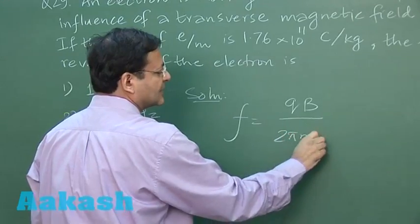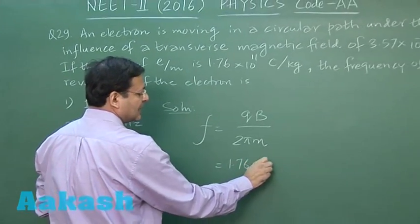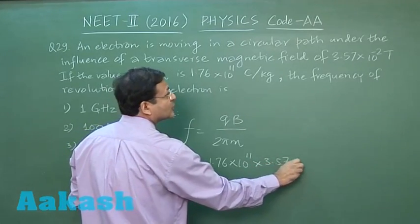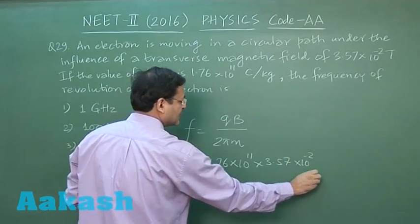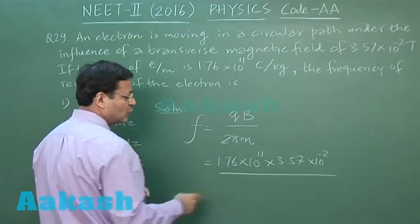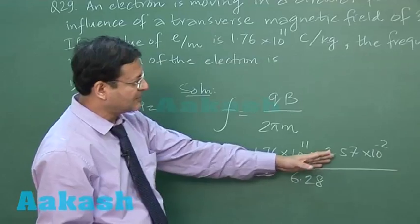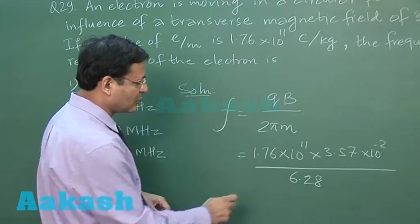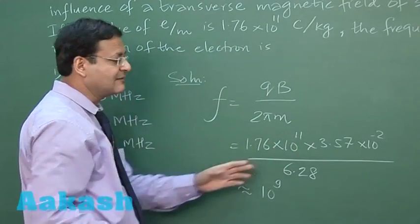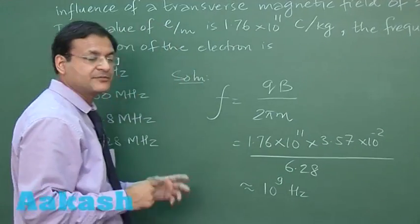Standard values have been given. Q/M value is 1.76 × 10¹¹ and magnetic field is 3.57 × 10⁻² tesla divided by 2π. 2π is 3.14 multiplied by 2, that's 6.28. If you look at the order, this multiplied by this and this will be cancelled. So approximately 10⁹ hertz is the frequency.